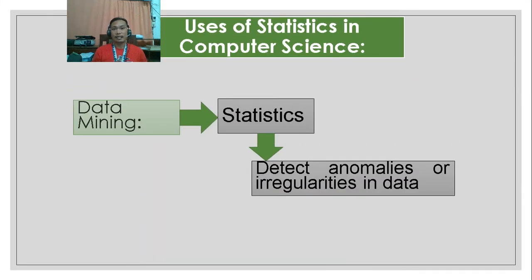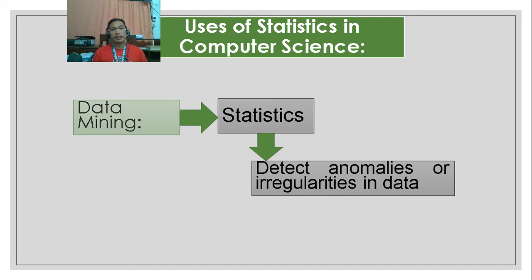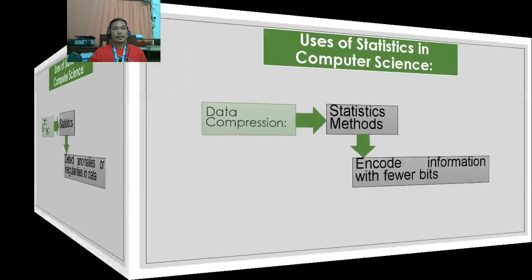Another use of statistics is data mining. Data mining uses statistics to detect anomalies or irregularities in data. In secondary data, you determine whether a particular dataset is normal data, abnormal or non-normal data, skewed data, or whether there are outliers and irregularities in the data. Common statistical tools include cluster analysis, predictive analytics, principal component analysis, and factor analysis — these are statistical methods used in detecting anomalies in data.